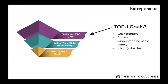Number one, we want to get attention. When we're interrupting somebody on a particular media, we want to get them to pay attention to our advertising specifically. We also need to show that we understand a problem they have. Part of this will be in how we target our audience and what we say in our ad or video — to get attention and at least convey the idea that we know what they're going through, identifying their need.